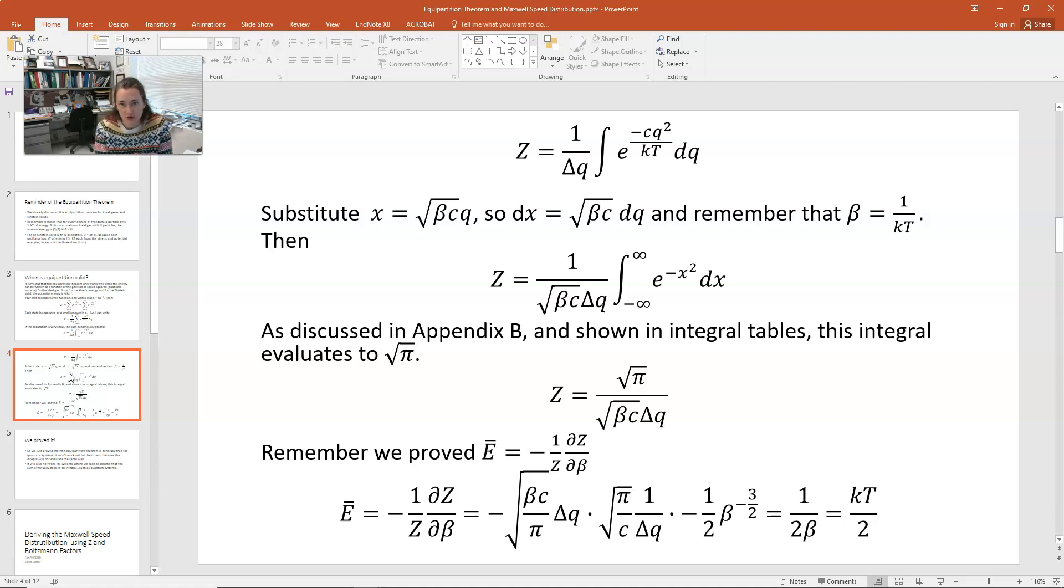Okay, here's our integral. Now, to do this integral, we're going to do a substitution. We're going to substitute that x, our substitution variable, is equal to the square root of beta c times q. Remember that beta is 1 over kt, so this is equivalent to saying that x is equal to the square root of c over kt times q, and that would mean that when we squared x we basically got our exponent here, negative cq squared over kt. Now that means that dx would be the square root of beta c times dq, remembering that beta is 1 over kt.